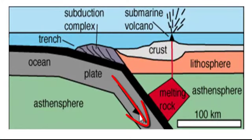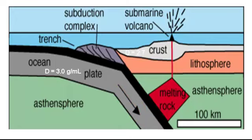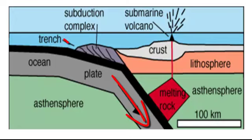It's always going to be the denser plate. Oceanic crust has a density of 3.0, continental has a density of 2.7. So when oceanic meets continental, 3.0 is denser and it will be forced underneath. When the denser plate is driven underneath, it will actually tug on the other one, pull it down, and create a V-shaped valley.